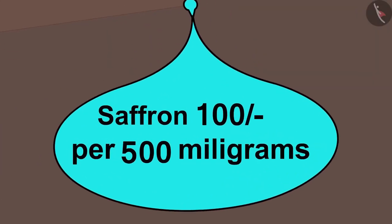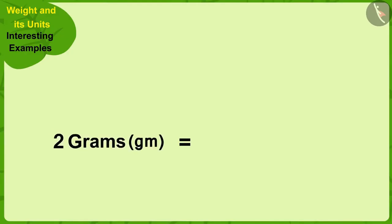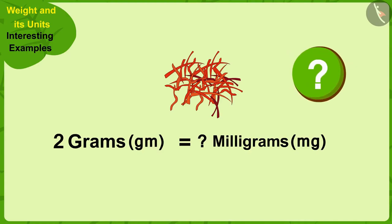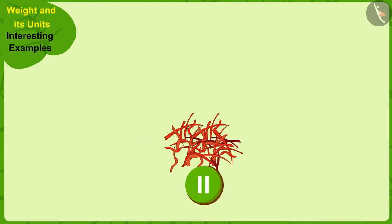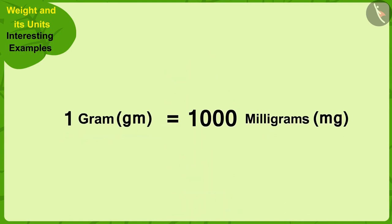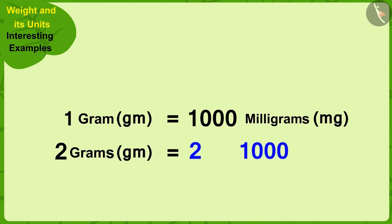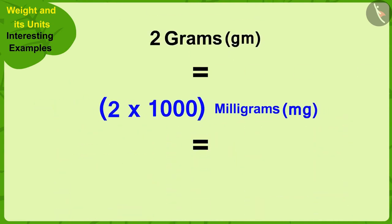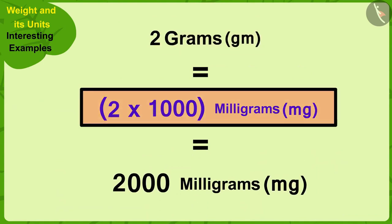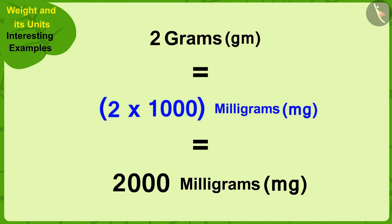I have to buy 1 kilogram and 450 grams of paneer. Now the cost of saffron is written in milligrams, so how many milligrams will be equal to 2 grams of saffron? Remember, 1 gram is equal to 1,000 milligrams. To convert 2 grams to milligrams, we multiply 2 by 1,000, giving 2,000 milligrams. Whenever we express a larger unit in a smaller unit, we use multiplication.